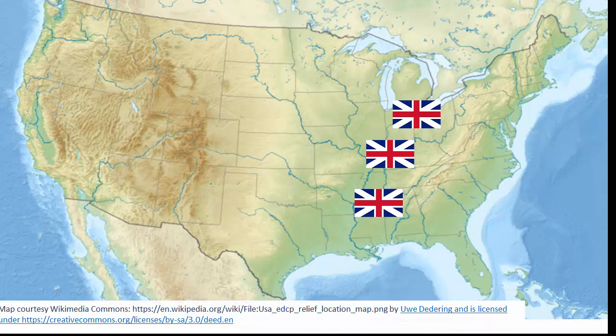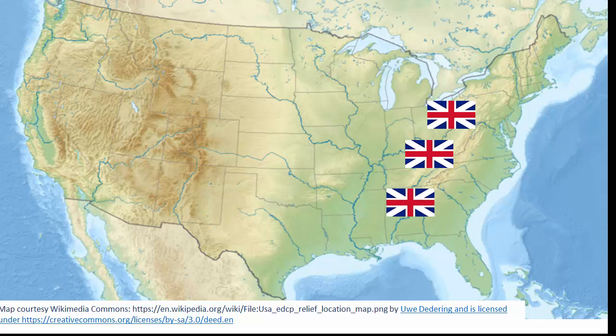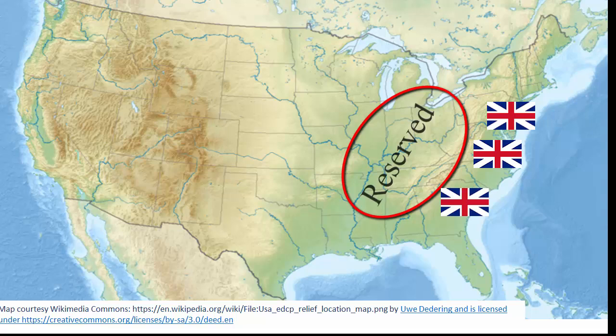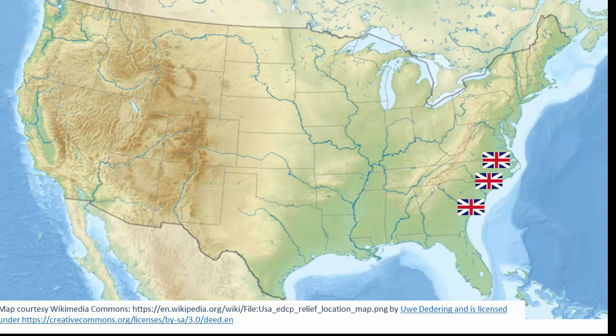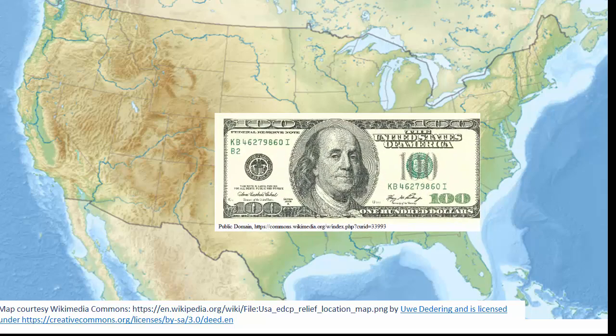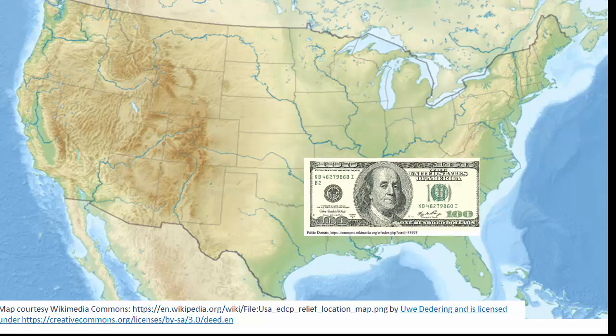Unfortunately for the colonists, there had been a number of American Indian uprisings in the area, and King George III determined that the region should instead become a reservation for the American Indians of the region. On top of that, the King and Parliament, England's legislative body, felt the colonists should bear the burden of the expenses for the war. To this end, they began passing acts that called for the colonists to pay taxes.